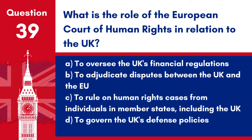Question 39: What is the role of the European Court of Human Rights in relation to the UK? a. To oversee the UK's financial regulations. b. To adjudicate disputes between the UK and the EU. c. To rule on human rights cases from individuals in member states, including the UK. d. To govern the UK's defence policies. Answer: c. To rule on human rights cases from individuals in member states, including the UK. The European Court of Human Rights can hear cases from individuals who believe their rights under the European Convention on Human Rights have been violated.